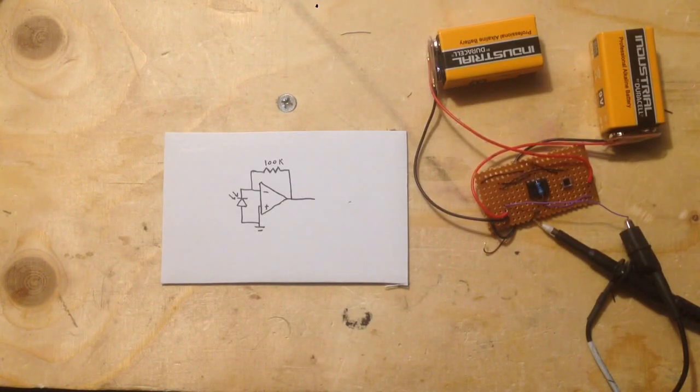I use the trans-impedance amplifier to amplify the current coming from the photodiode. When you shine light on a photodiode it actually produces electricity, it's basically a kind of photocell.